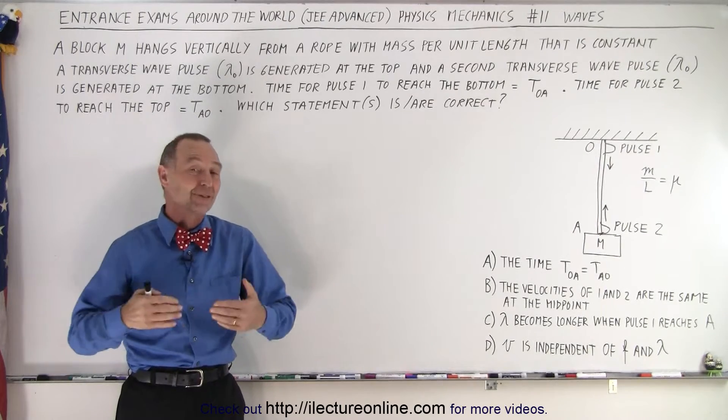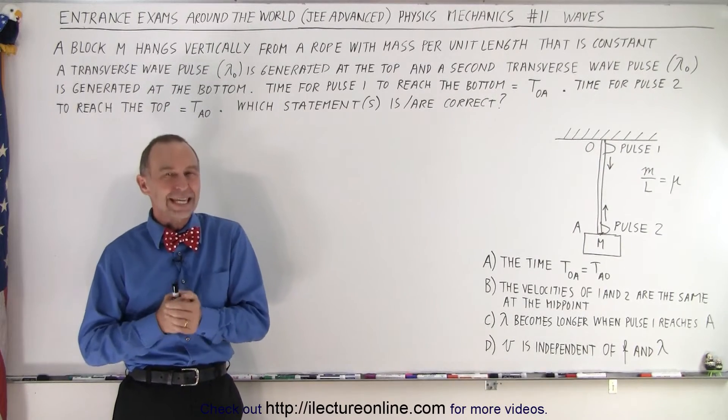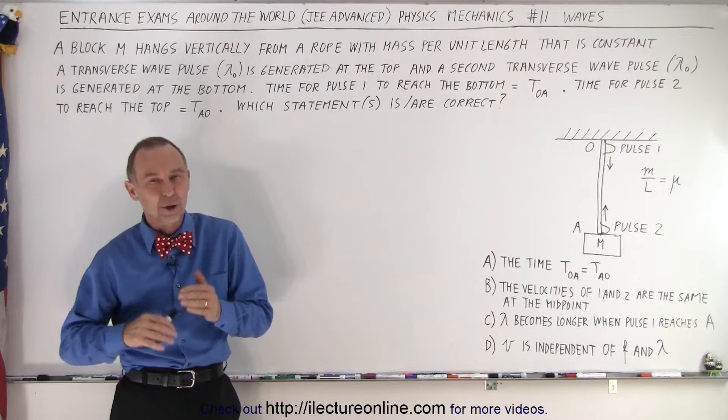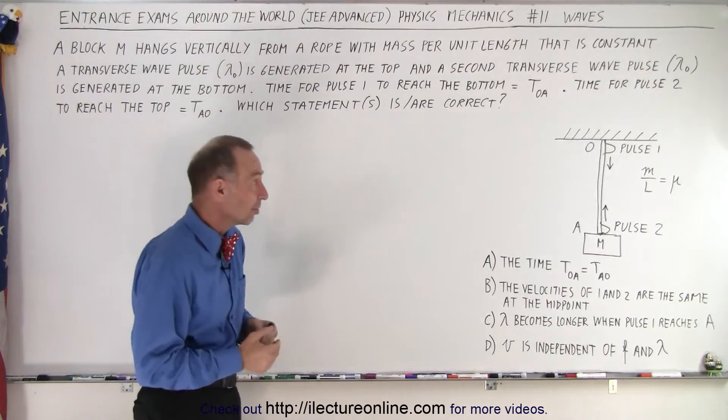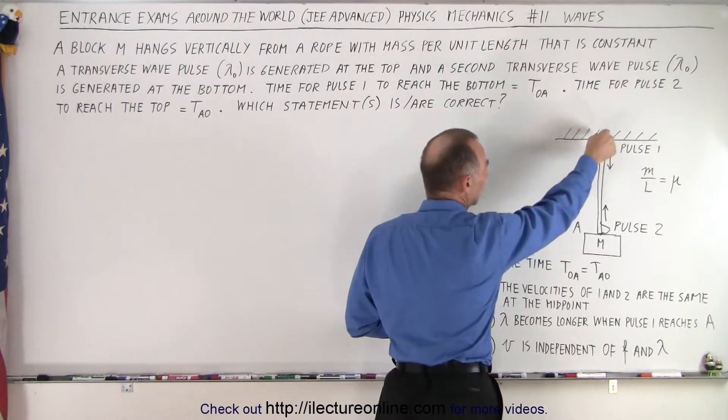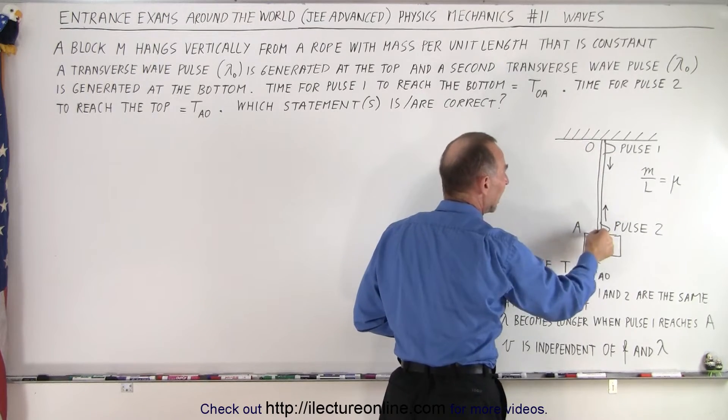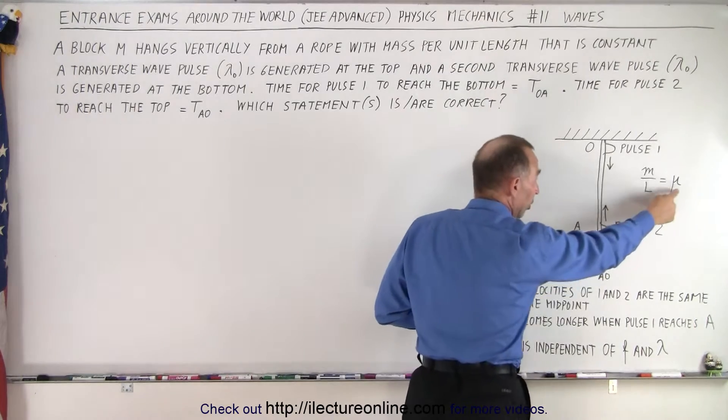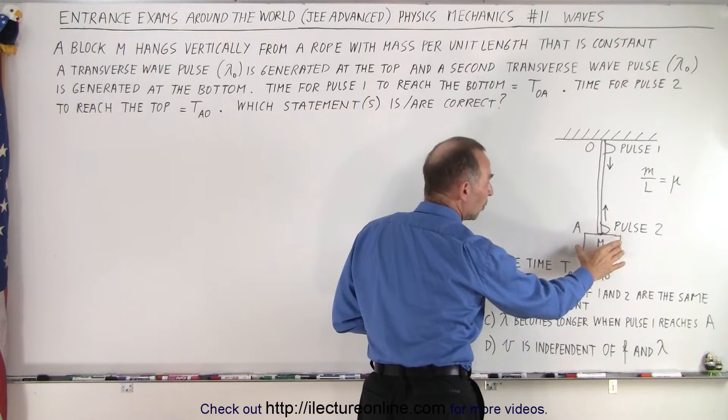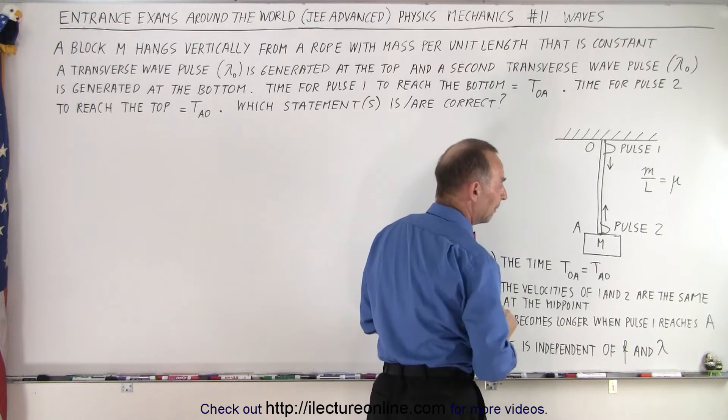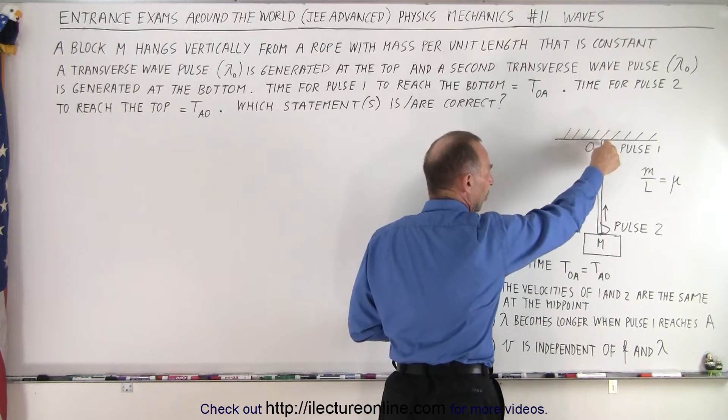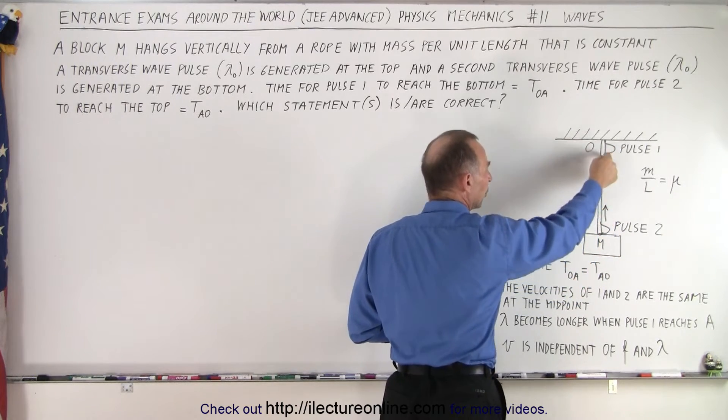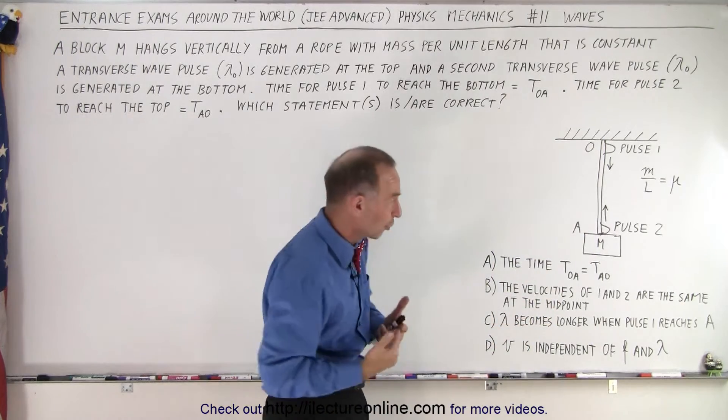Welcome to our lecture online. Here's our next problem from one of the JEE Advanced exams that tests us in physics, specifically mechanics, and even more specifically waves. We have an interesting situation: a ceiling with a rope attached, and the rope has mass so we have to consider the mass per unit length mu. At the bottom of the rope we have an object with mass m. We create a pulse at the very top that travels down to the bottom, and a second pulse at the bottom that moves to the top. Those pulses are transverse waves.